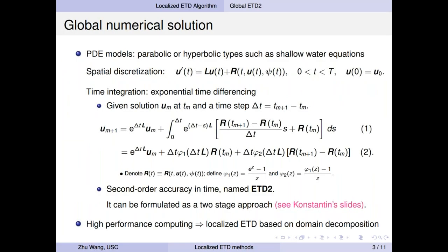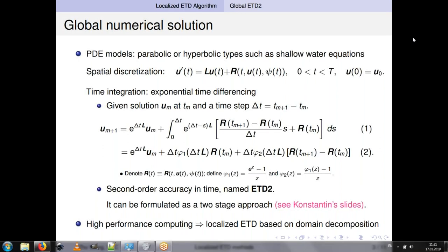So here are the details. Our method could handle quite general model problems, such as parabolic PDEs or hyperbolic PDEs like the shallow water equations we're going to focus on in this talk. So suppose after spatial discretization, we achieve this system of equations: U prime equals LU plus R. Here, U is a state variable vector, L is a matrix corresponding to a linear operator, R is a remainder which is usually nonlinear, depends on U and the boundary data psi.